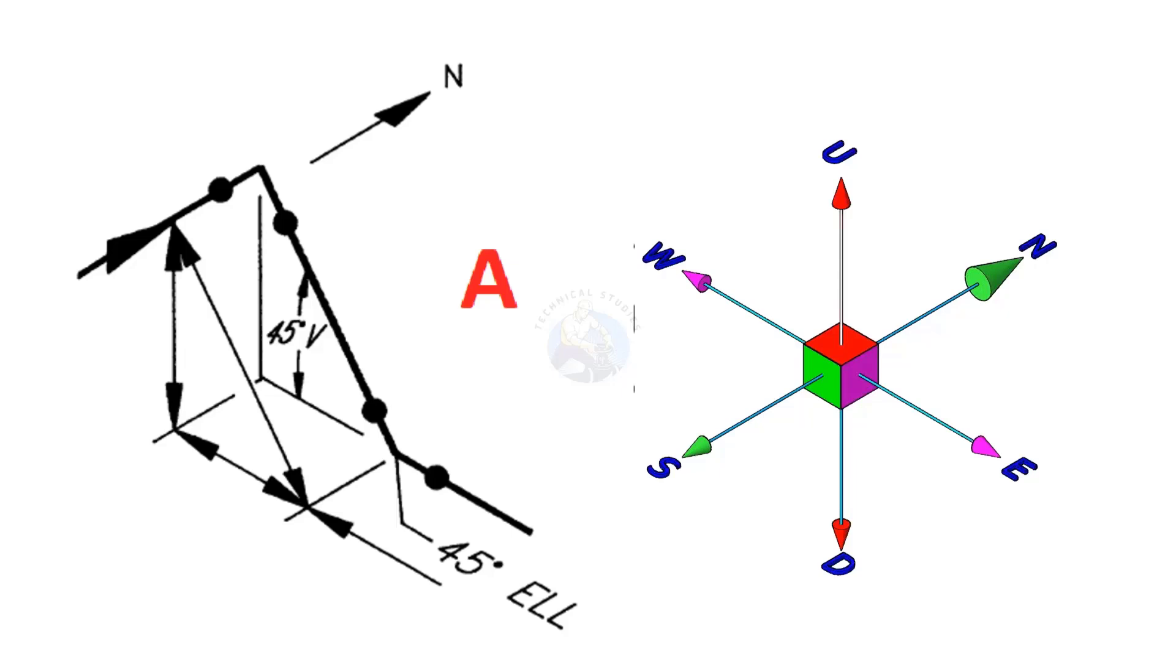Let us start with the first example. See the north direction of the drawing. Pipe goes from south to north, turns 90 degrees downwards, rotates 45 degrees to the east, and travels to the east direction.